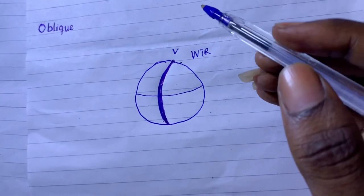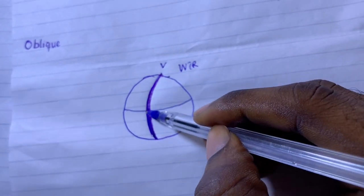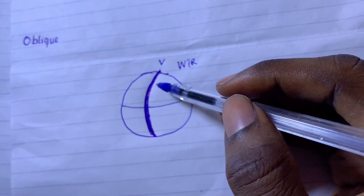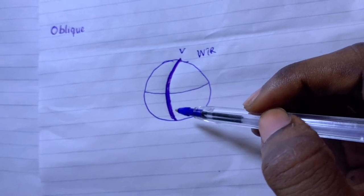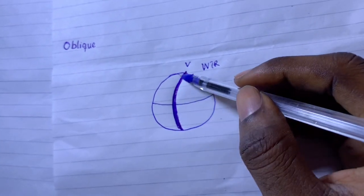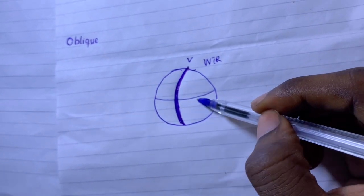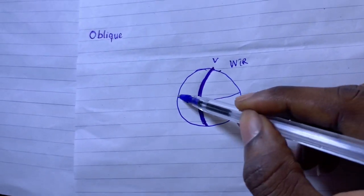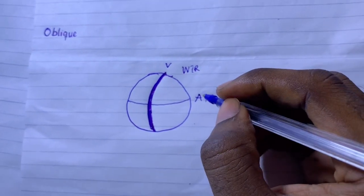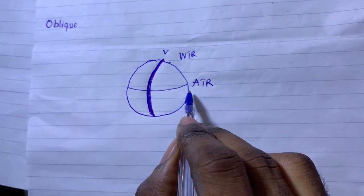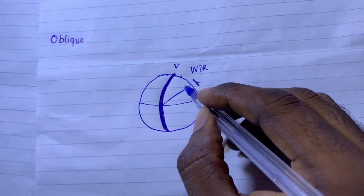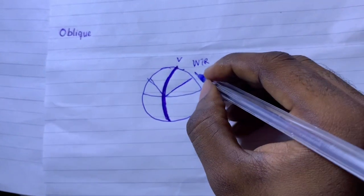If the cornea has the vertical meridian more curved, that is with-the-rule astigmatism. Against-the-rule means the vertical meridian is not more curved — the horizontal meridian is instead more curved. Oblique astigmatism lies somewhere between with-the-rule and against-the-rule, with the steepest meridian at an oblique angle.